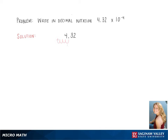That new decimal place — all those spaces we need to fill with zeros. Our new number becomes 0.000432, and that is our final answer.